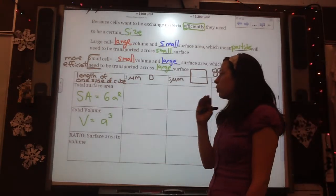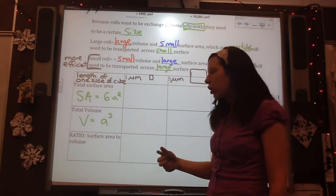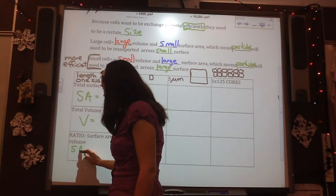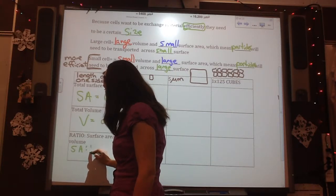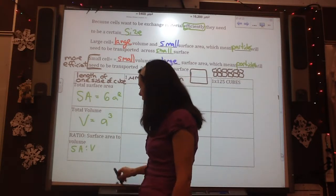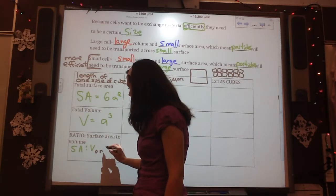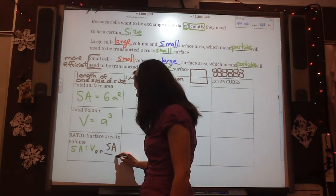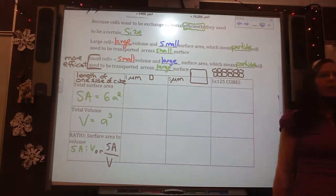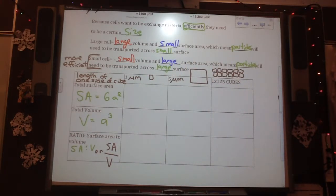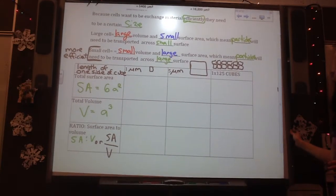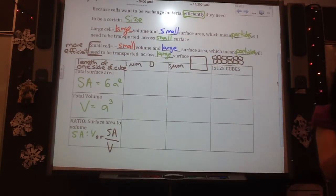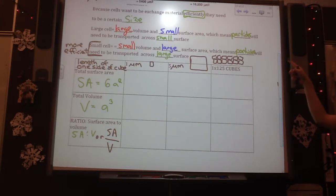Now, when you go surface area to volume ratio, that's like going SA, and then a colon, and then a V. Or you could represent it as SA divided by V. So it's like saying I'm comparing surface area to volume. So it's a comparison. So comparisons are fractions, right? So you need to represent it like a fraction. So let's do a little bit of math to prove what we were just saying about efficiency.